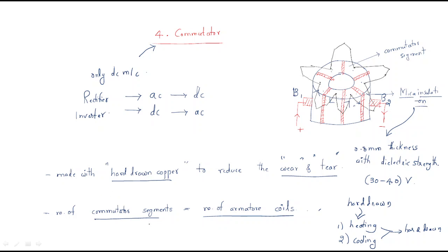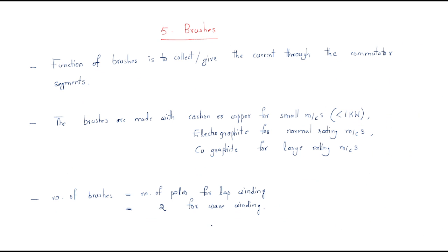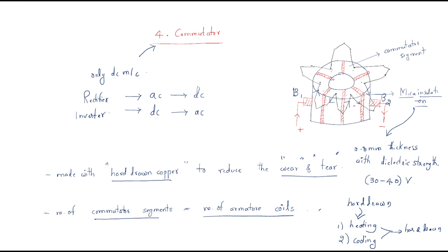The number of commutator segments equals the number of armature coils — this is the most important point. The number of armature coils decides the number of commutator segments. This completes the discussion on armature poles and the commutator.